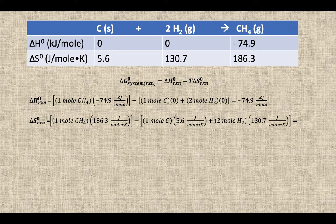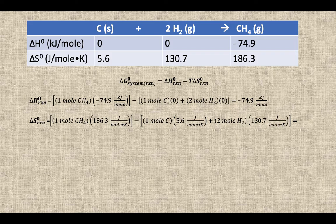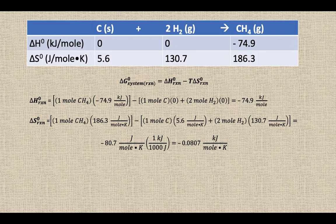Then, if we did the delta S of reaction, we do the same thing—we're just substituting in S values instead of H values—and we get a value of negative 80.7 joules per mole Kelvin.